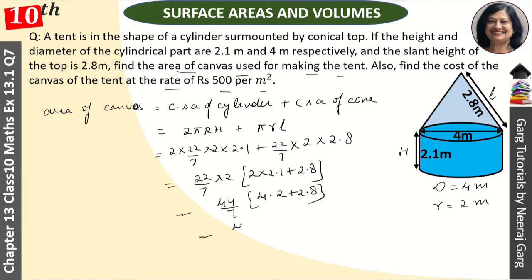It is equal to 44 upon 7 into 7.0. So this 7 say 7 cancel ho gaya. Or humara answer a gaya 44 meter square. Yeh humara a gaya area of canvas.